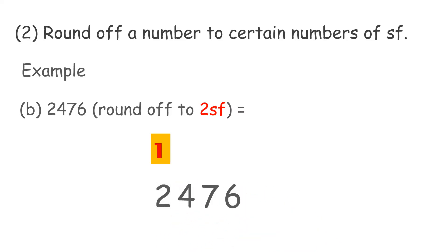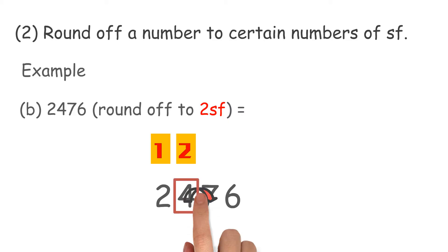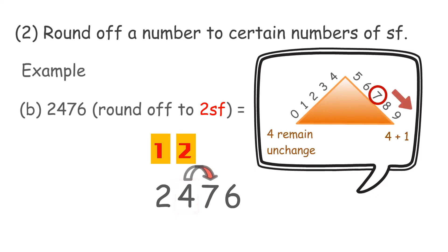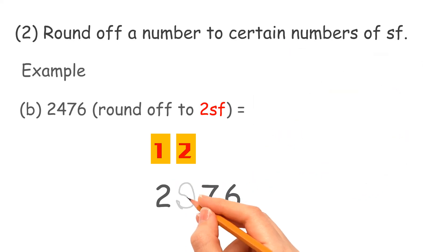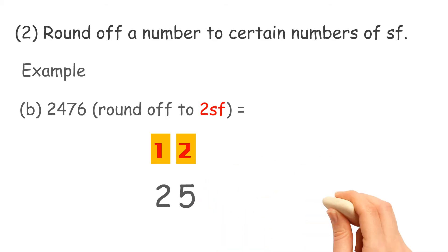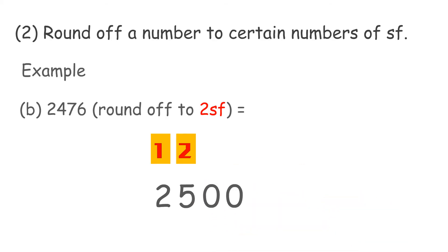Example B: count 1, 2 — the digit to be rounded off is 4. Look at the right-hand side digit of 4. It is 7; since 7 is greater than 5, so add 1 to 4, and replace the 7 and 6 with 0. Therefore, the answer is 2,500.